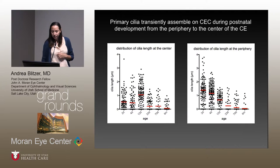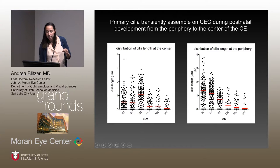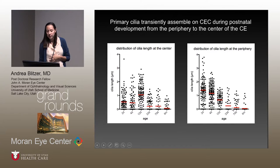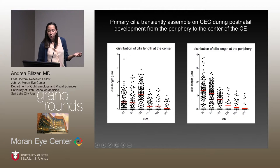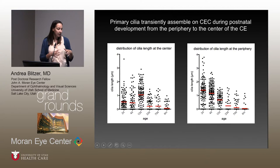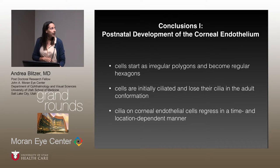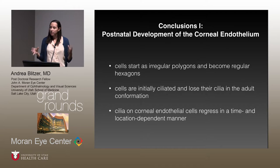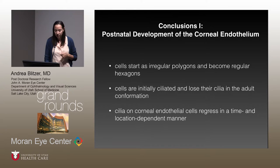This can be quantified by looking over the course of development at how cilia length changes. At the periphery, cilia start really long and are lost as you progress to adulthood. The same pattern is seen at the center, though the longest cilia occur a bit later. This suggests it is a polar system that develops from the periphery to the center over time. The cells start as irregular polygons and become a honeycomb shape; they are initially ciliated and lose those cilia in a time- and location-dependent manner.